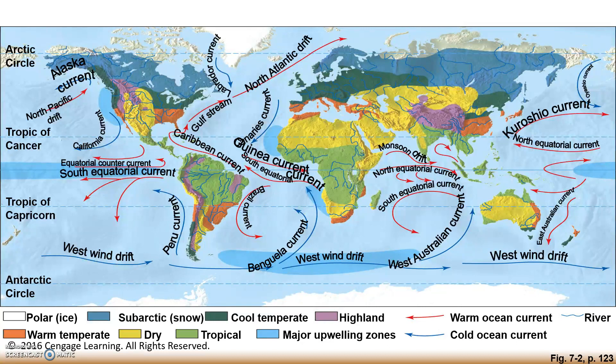There are three major factors that determine how air circulates in the lower atmosphere, because air circulation also impacts climate. Those three factors include: one, uneven heating of the Earth's surface by the Sun — the Sun's rays are more direct around the equator than in the northern or southern hemisphere, so the Earth is unevenly heated; two, the rotation of the Earth on its axis; and three, the properties of the air, the water, and the land on Earth.